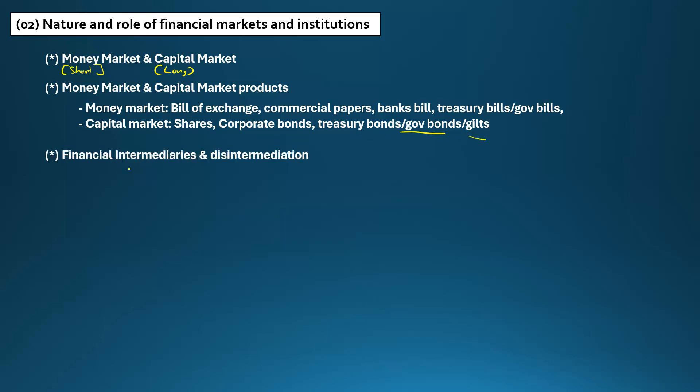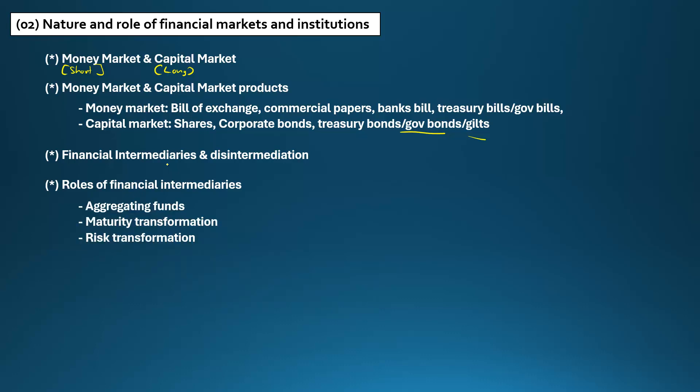The next concept is financial intermediaries and disintermediation. Financial intermediaries sit between lenders and borrowers — they take money from depositors and lend it to borrowers. Disintermediation means lenders and borrowers transact directly without going through an intermediary, effectively eliminating the intermediary.